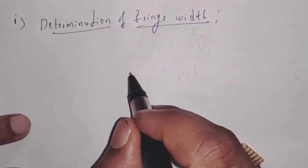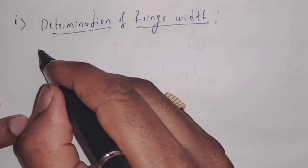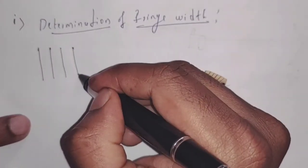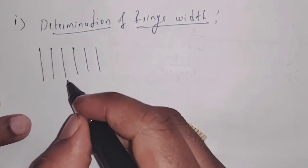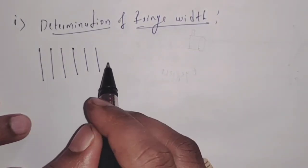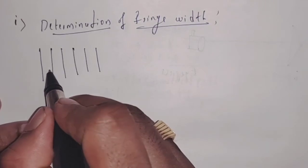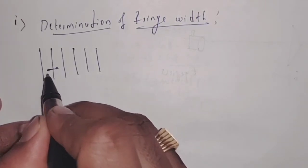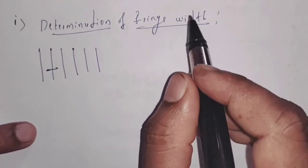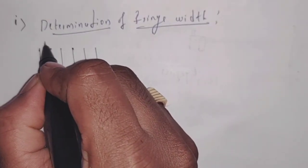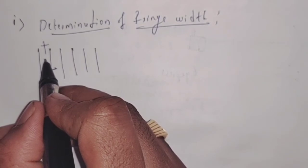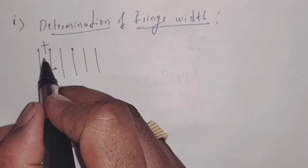In the eyepiece, we are going to observe an interference pattern — that is, alternating dark and bright fringes. The distance between two fringes gives the fringe width. In the eyepiece, a vertical cross wire is provided, and we coincide that vertical cross wire on the first bright fringe and note the position of the eyepiece as read on the scale.